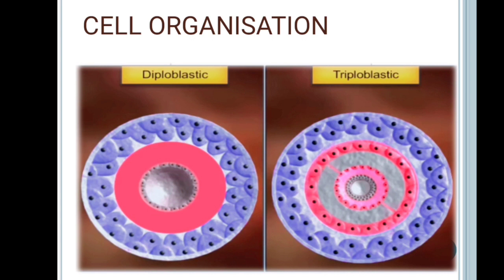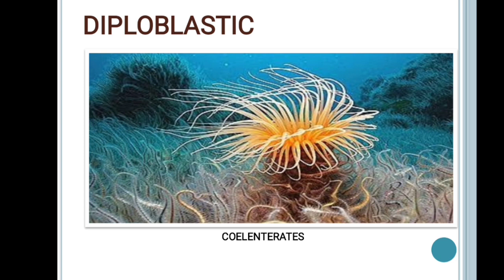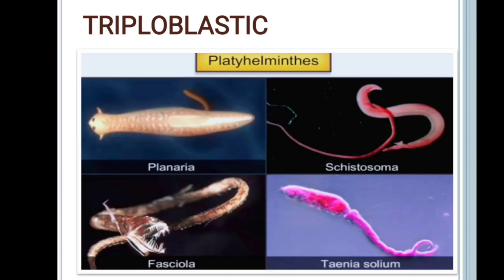Cell organization is the next feature used for classification. There are two types of cell organization: diploblastic and triploblastic. Cnidarians have diploblastic organization, where the germinal layer of the cell consists of an external ectoderm and an internal endoderm. Members from phylum platyhelminthes to chordates have triploblastic organization, where a third germinal layer, the mesoderm, is found between the ectoderm and endoderm.